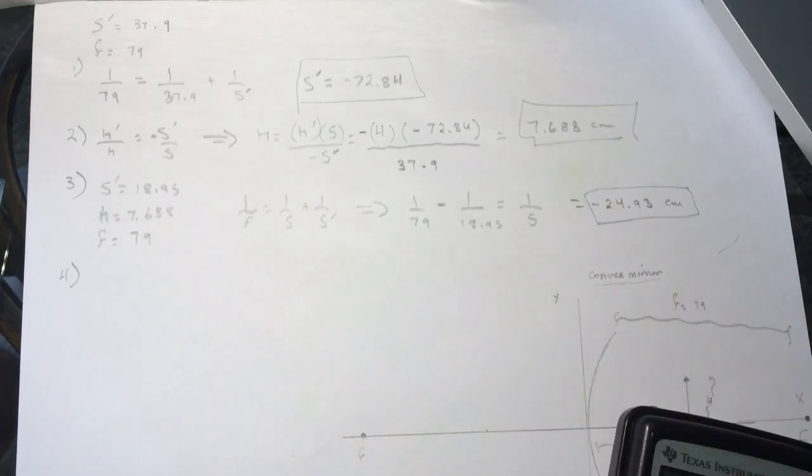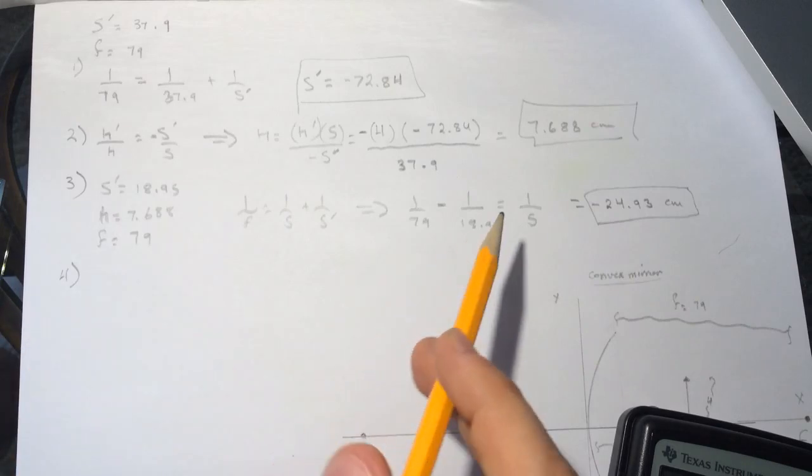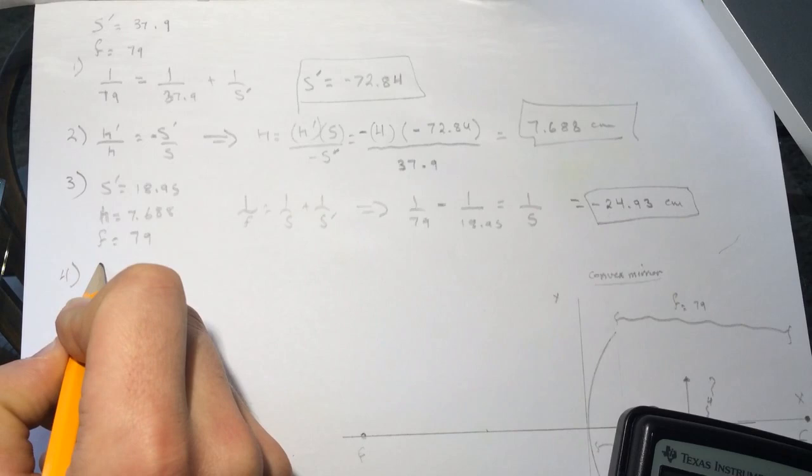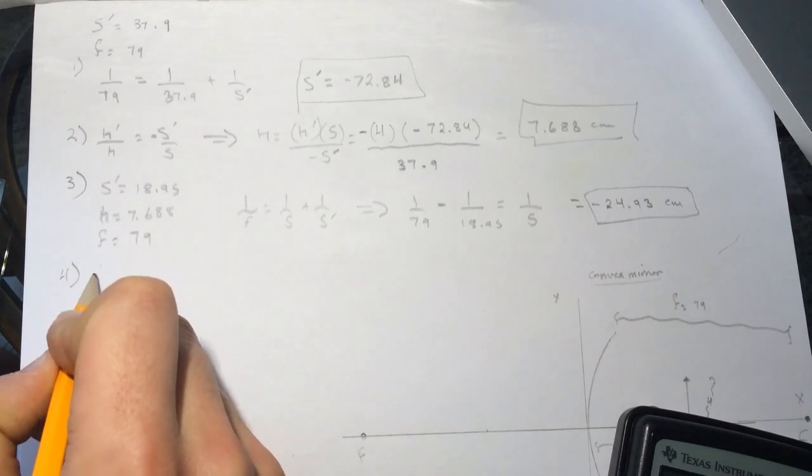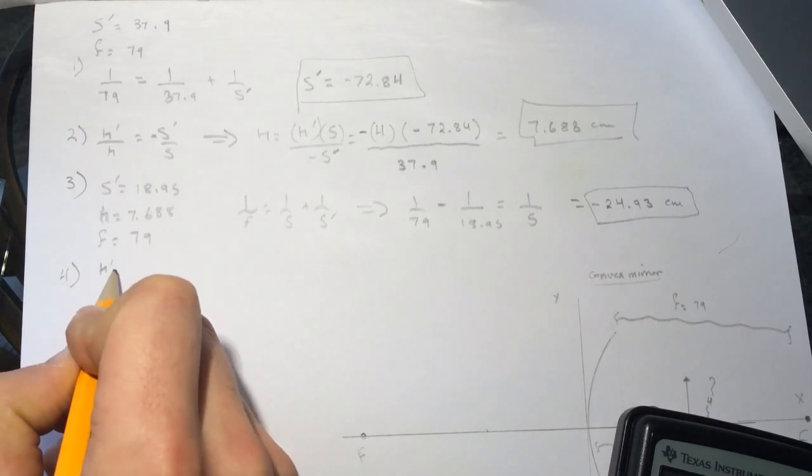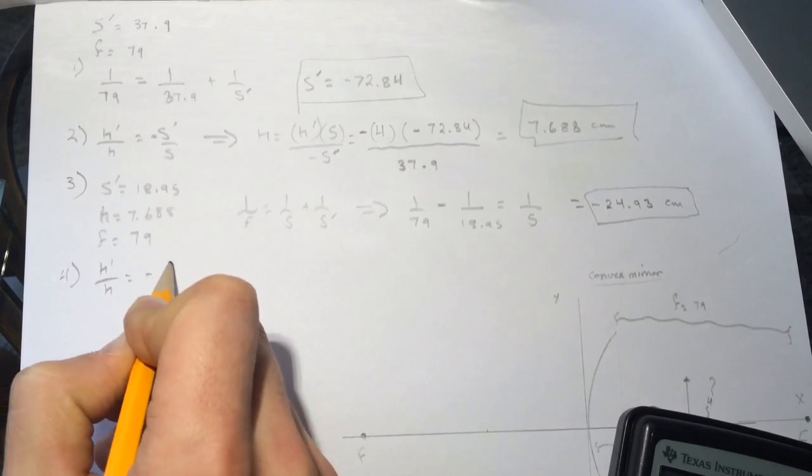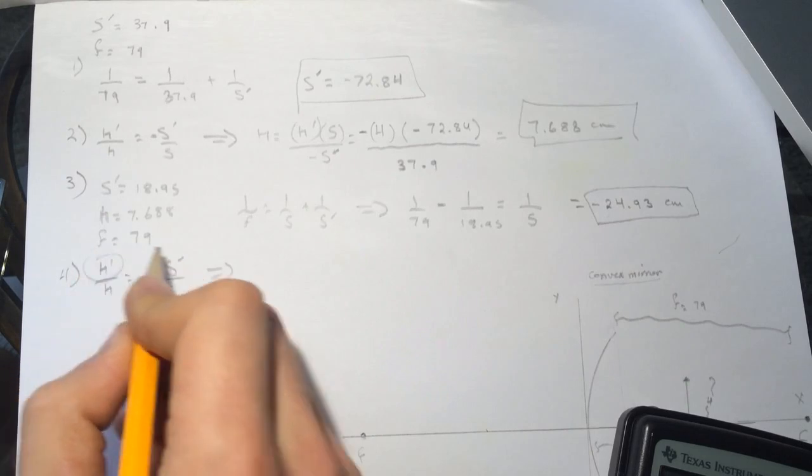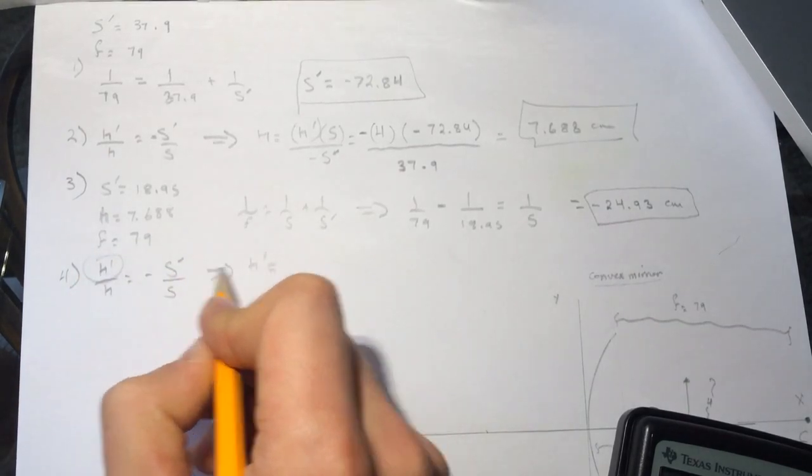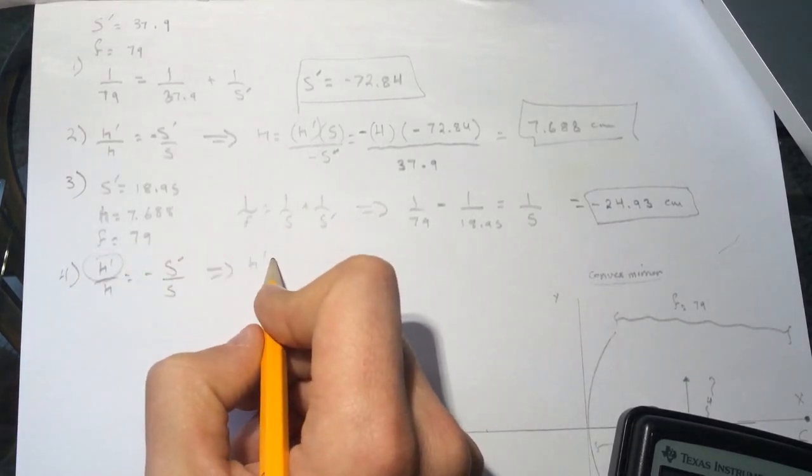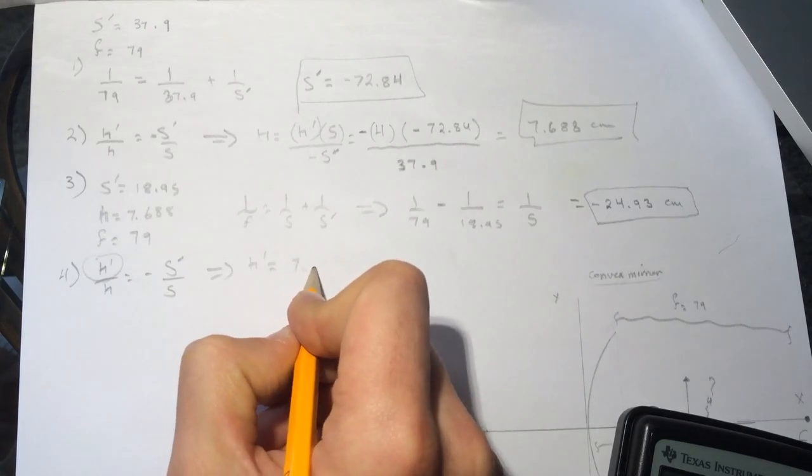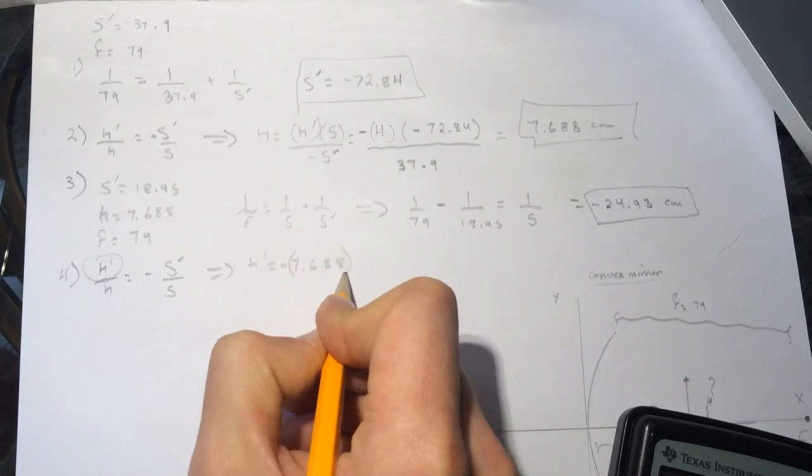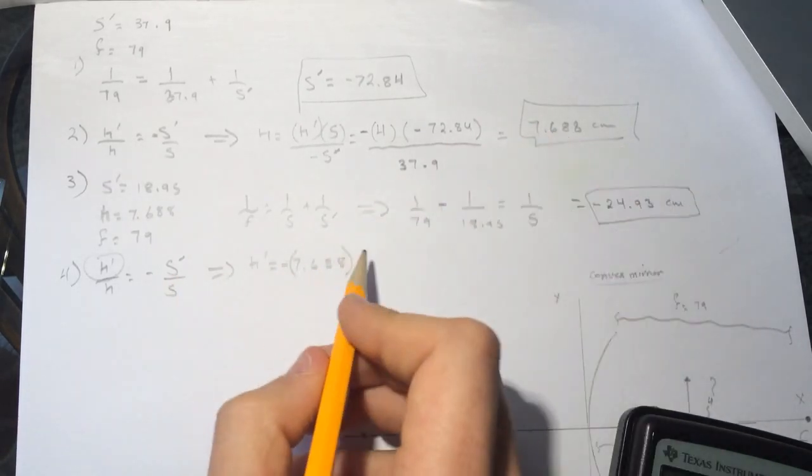All right. So they want the y coordinate for this position here. So they want it for the image. So H prime over H equal minus S over S. This is prime. So they want to find this. So H prime will be equal to the height which is the height we found, 7.688, and it's negative. It's negative. It's just from this negative. This is positive.